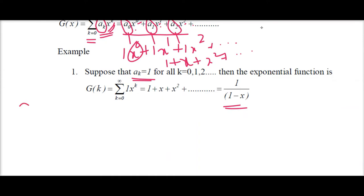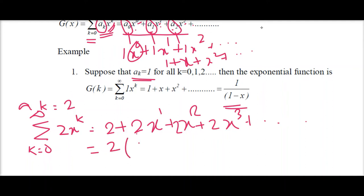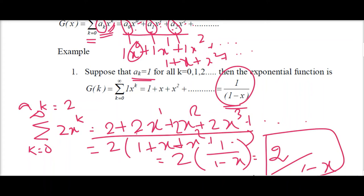Suppose ak equals 2. Then sigma from k=0 to infinity of 2·x power k equals 2 plus 2·x power 1 plus 2·x power 2 plus 2·x power 3, and so on. Taking 2 as a common factor gives 2 times (1 plus x plus x squared and so on), which is nothing but 2 times 1/(1-x), equal to 2/(1-x). This is the general function arrived from that series.